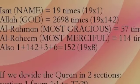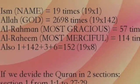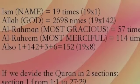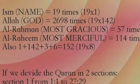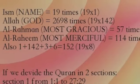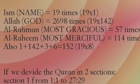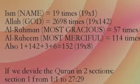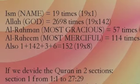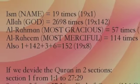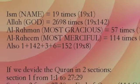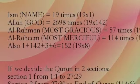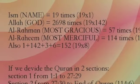Every single word of the Basmala occurs as a multiple of 19 in the Quran. The word 'Name' occurs 19 times. The word 'God' occurs 2,698 times, or 19 times 142. The word 'Most Gracious' occurs 57 times, or 19 times 3. And the word 'Most Merciful' occurs 114 times, or 19 times 6.